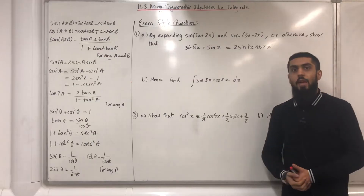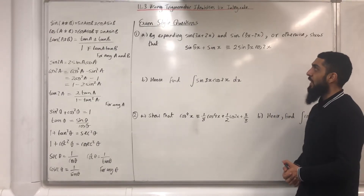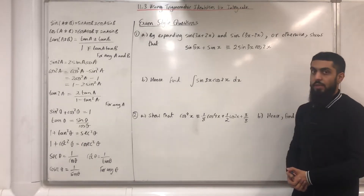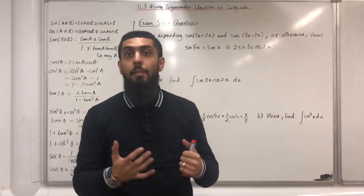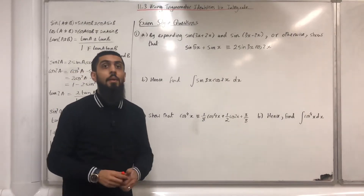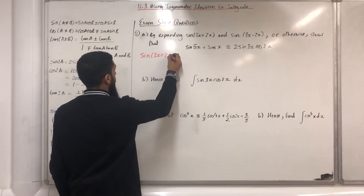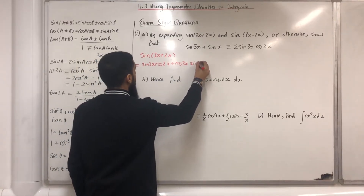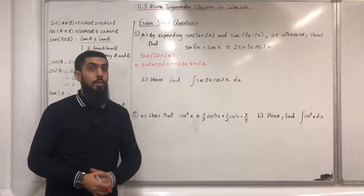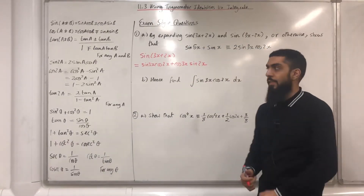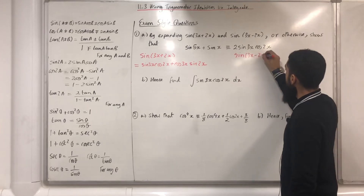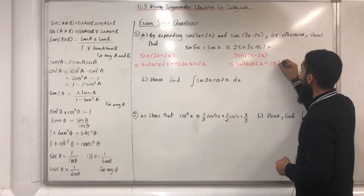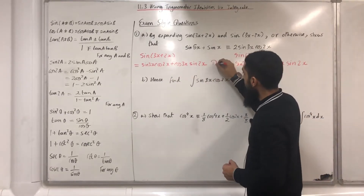Here are two exam-style questions. Let's have a look at question 1, part a: by expanding sin(3x + 2x) and sin(3x - 2x), or otherwise, show that sin 5x plus sin x is identical to 2 sin 3x cos 2x. My first step is to use the addition formula to expand sin(3x + 2x): the expansion is sin 3x cos 2x plus cos 3x sin 2x. The next step is to use the addition formula for sin(a - b) to expand sin(3x - 2x): the expansion is sin 3x cos 2x minus cos 3x sin 2x. I'll call these equation 1 and equation 2.